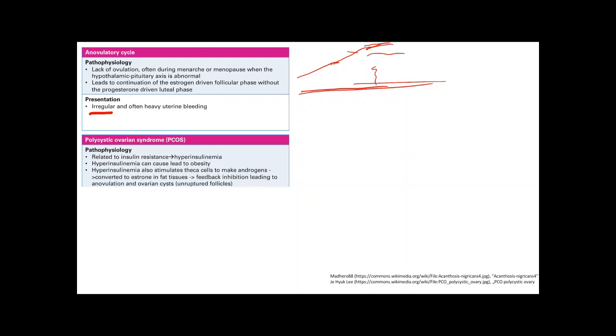Now PCOS. This is super classic, super key. So you're definitely going to see this on your test. The pathophysiology is related to insulin resistance. So if you're not responding well to insulin, your body just makes more. And hyperinsulinemia can lead to obesity. And it can also stimulate theca cells to make androgens.